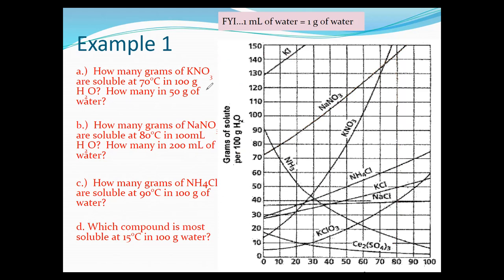How many grams of NH₄Cl are soluble at 90 degrees? Find the NH₄Cl line and our 90-degree point on the x-axis. Draw a line up until it intersects the curve and then across to the y-axis. Since we're dealing with 100 grams of water we don't need to adjust our number. We're looking at 70 grams — so 70 grams of NH₄Cl will dissolve in 100 grams of water.